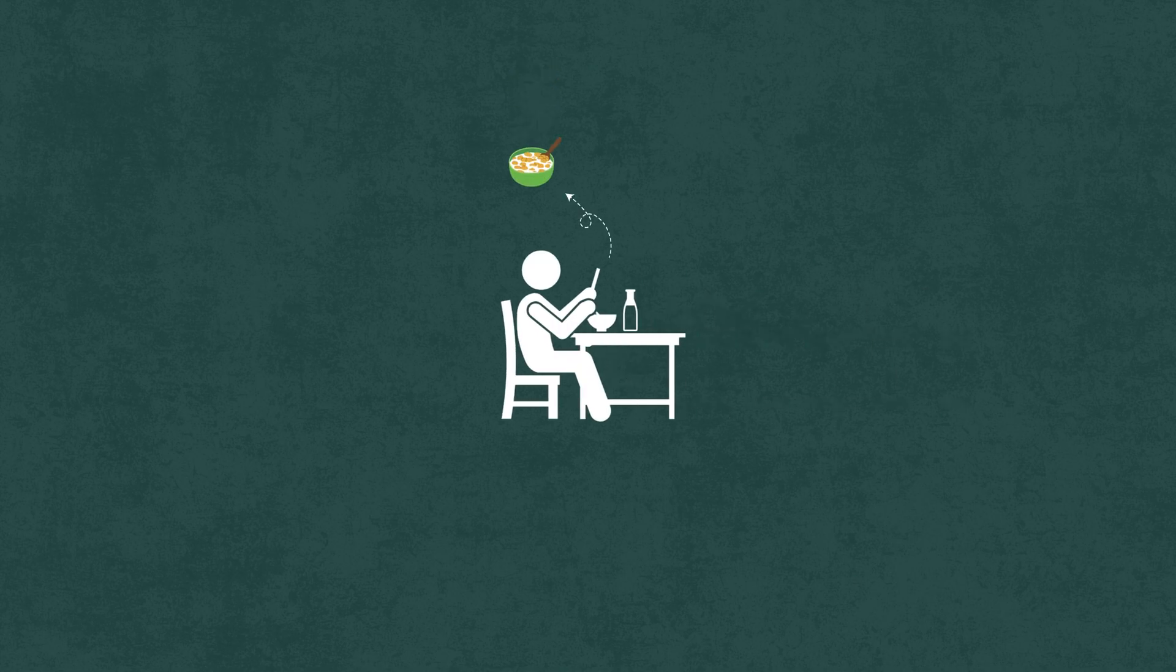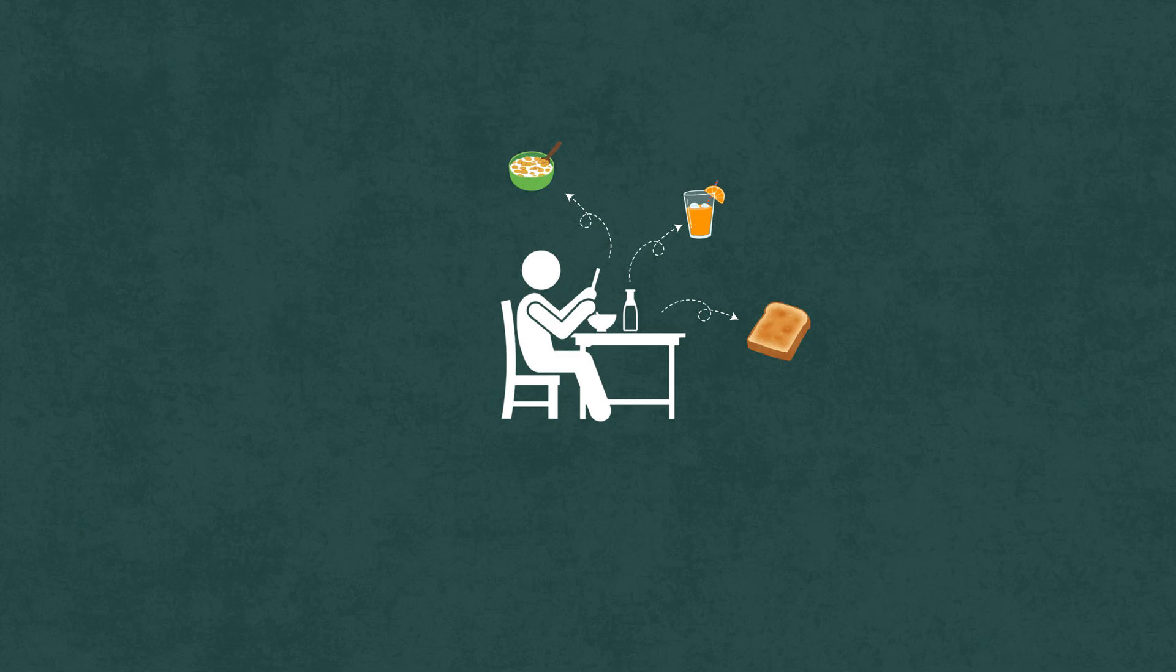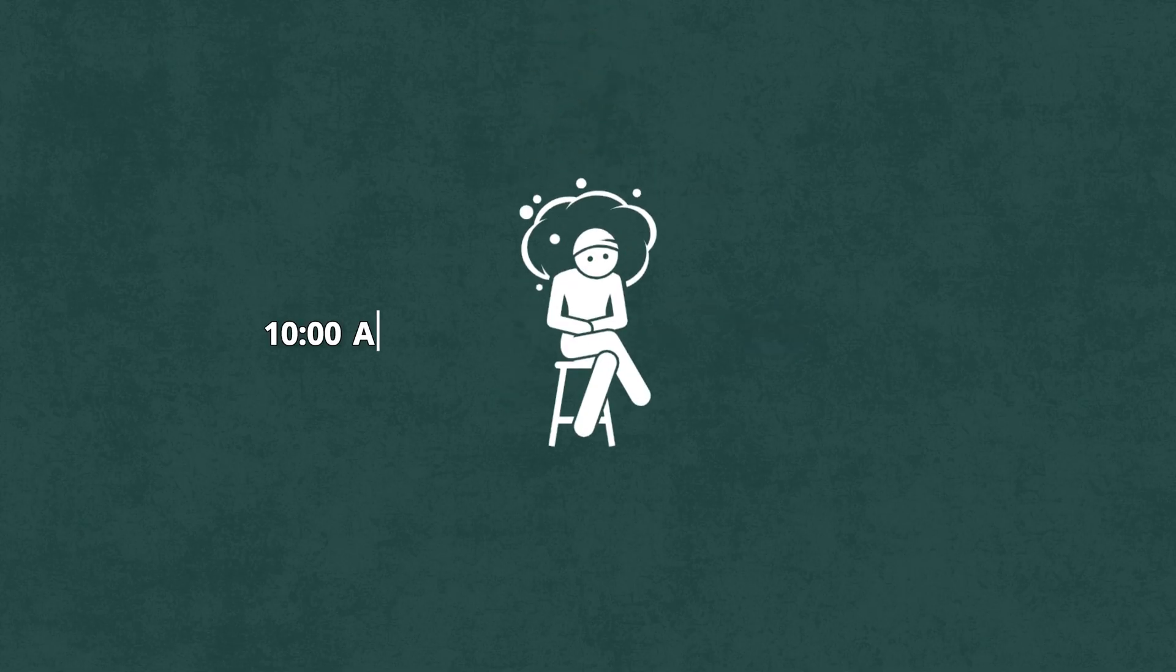If you start your day with a bowl of cereal, a glass of orange juice, or even just toast with jam, chances are you're setting yourself up for brain fog by 10am.